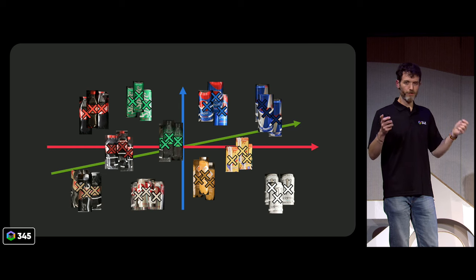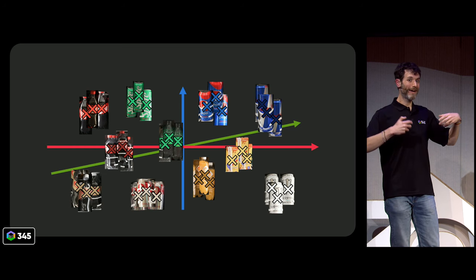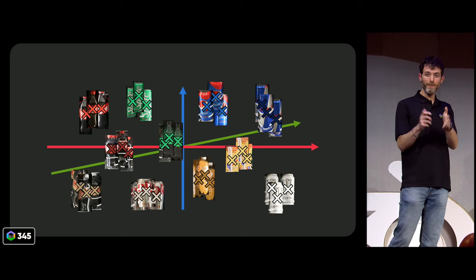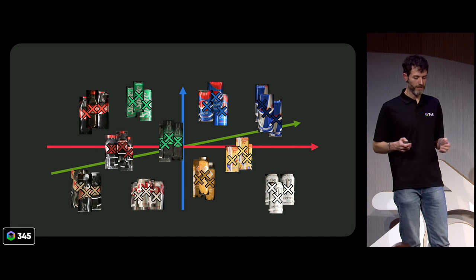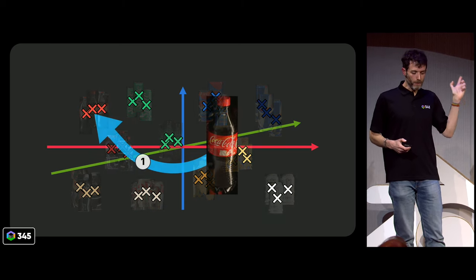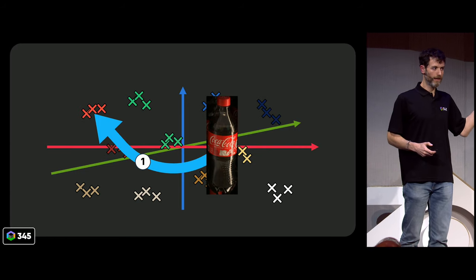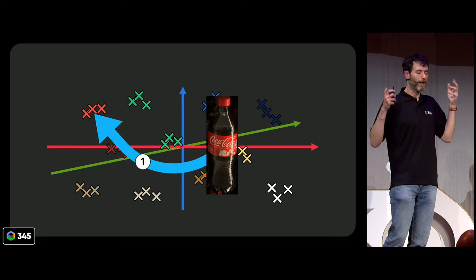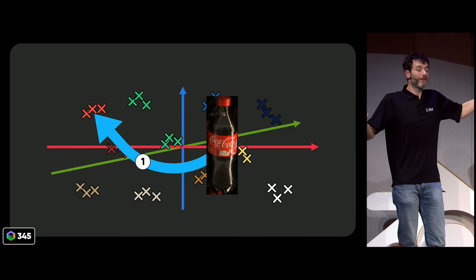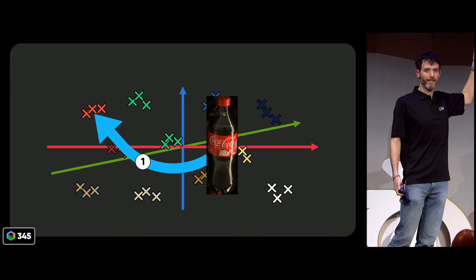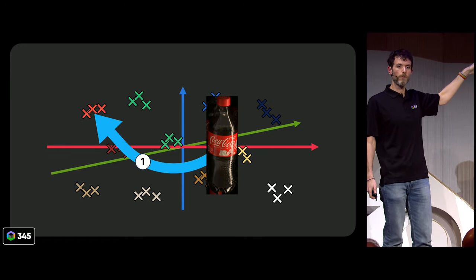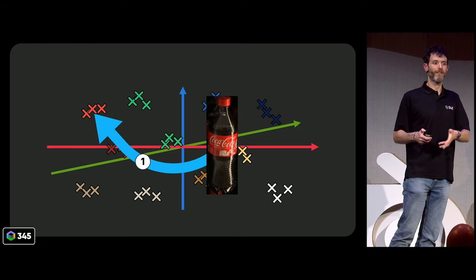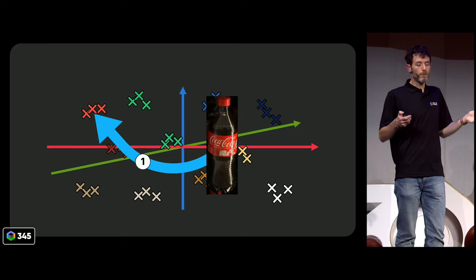The idea of distance between two points — trying to maximize the distance between images of different products and minimize the distance between images of the same product — that will remain the same. So then what we need is a way to turn an image into a point. This is really the key to the whole thing, but it's not too complicated. A simple, non-machine-learning way to create a function that takes an image and turns it into a point in 3D space would just be to take the average color of that image in RGB space. That would give you a point in 3D.